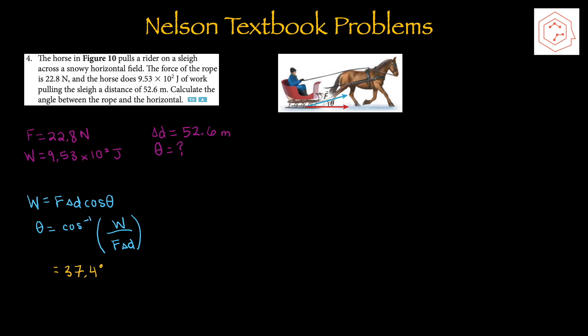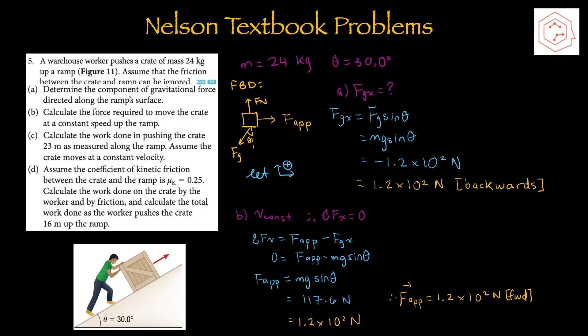Question 4: A horse pulls a rider on a sleigh across a snowy horizontal field. The force of the rope is 22.8 newtons, and the horse does 9.53 × 10² joules of work pulling the sleigh 52.6 meters. Calculate the angle between the rope and the horizontal. We know force, displacement, and work, so isolating for theta: theta equals inverse cos of (work divided by force times displacement), giving theta equal to 37.4 degrees.